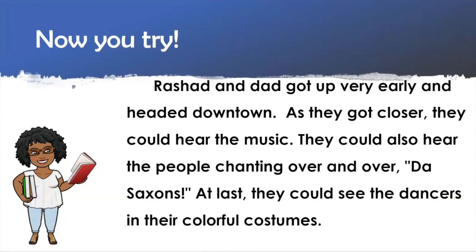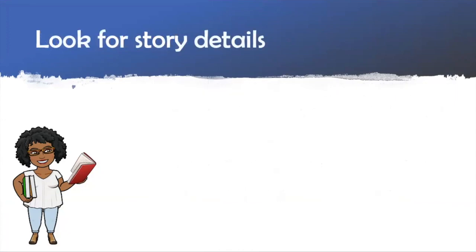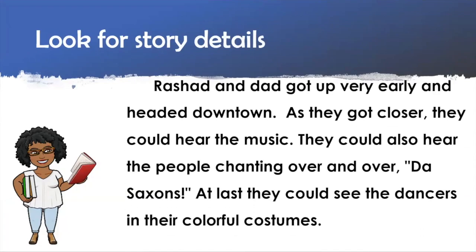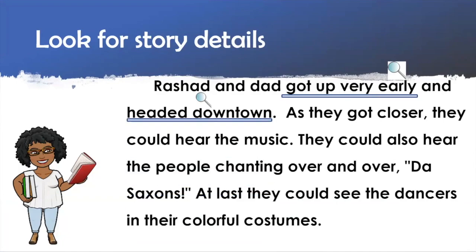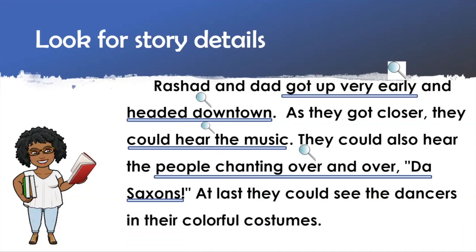Now, let's make our inference — we're going to find our clues. Let's look at the story one more time. The first clue said that they got up very early. The next clue is that they headed downtown. They could hear music, as well as they heard the people chanting over and over, 'The Saxons.' And there's one more clue — they could see dancers in their colorful costumes. You guys are great at finding the story clues or the story details.